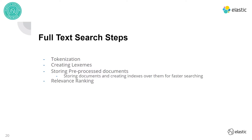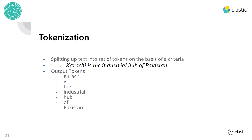Getting into the tokenizer: we split text into a set of different tokens based on some criteria. The criteria may vary — for example, if you have a comma-separated value string and want to split on commas, the criteria would be comma-based. In this example, we have the sentence 'Karachi is the industrial hub of Pakistan' and we split it on white spaces. The output tokens from the tokenizer would be: karachi, is, the, industrial, hub, of, pakistan — all as separate tokens.